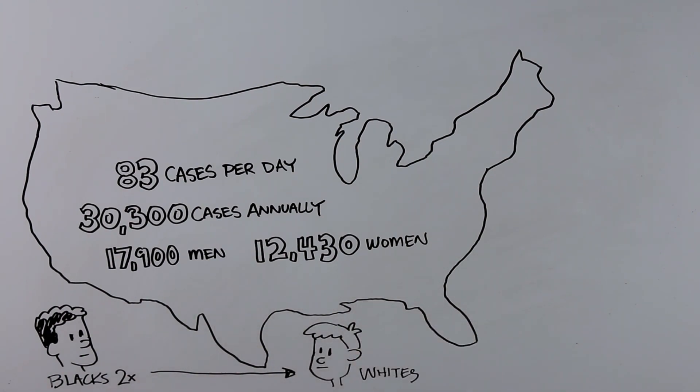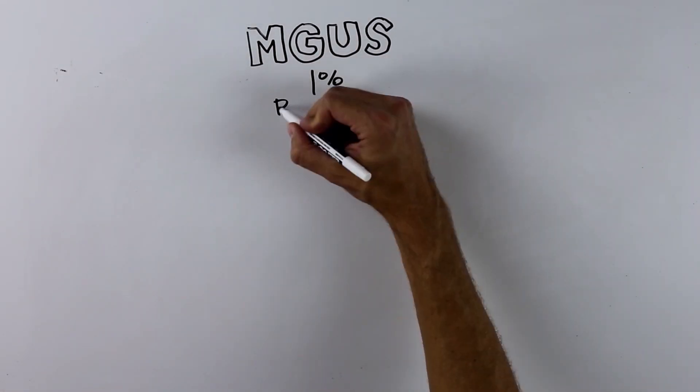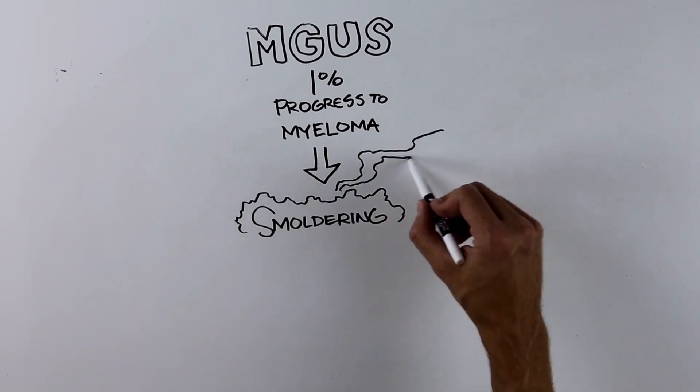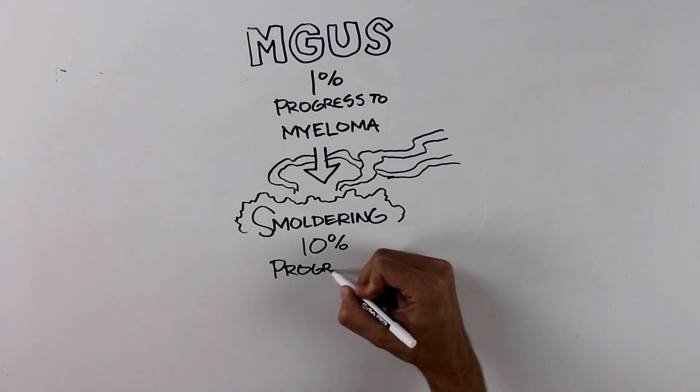People can have precursor stages of multiple myeloma and not even know it. Patients can start with a condition called MGUS, or smoldering myeloma. These are early stages of the disease.